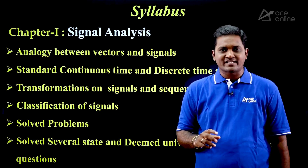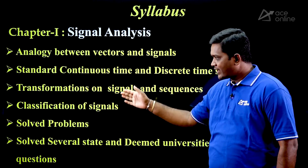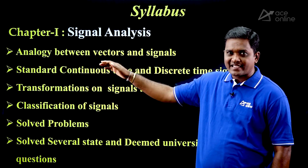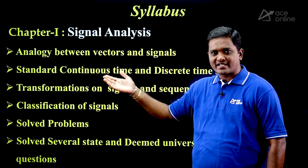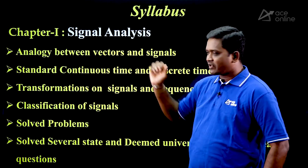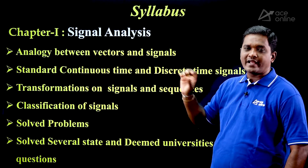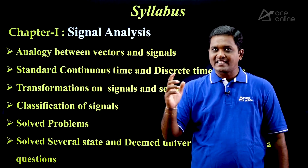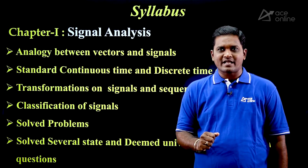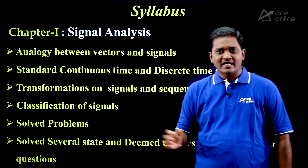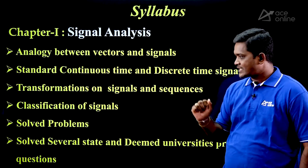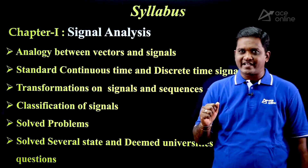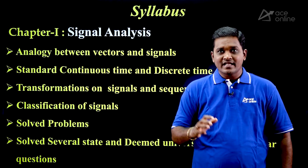Now let us see the contents covered chapter-wise. For Chapter 1, Signal Analysis, I am covering only the outline of concepts — note that sub-contents are present within each topic. The first topic is analogy between vectors and signals, the second is standard continuous and discrete time signals, the third is transformations on signals, and the fourth is classification of signals.